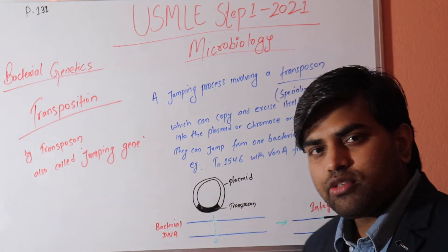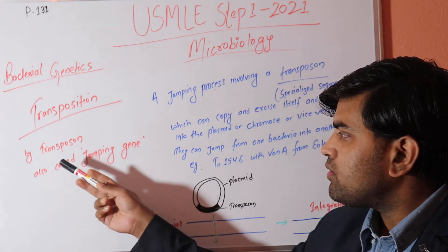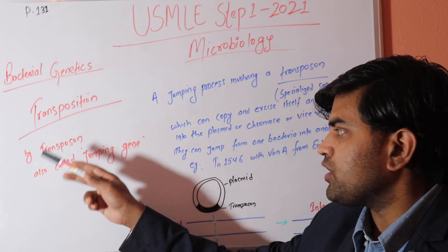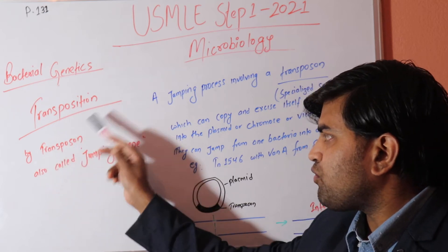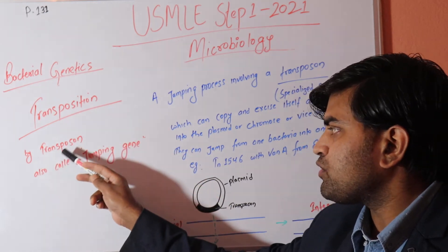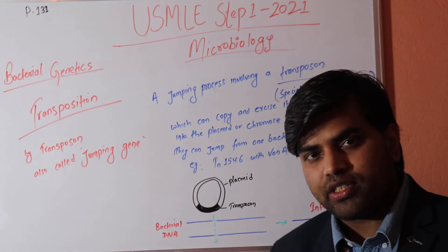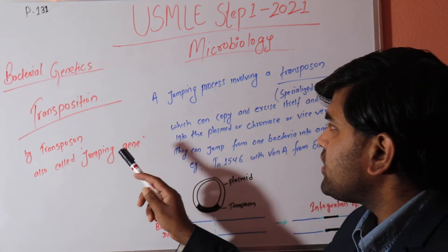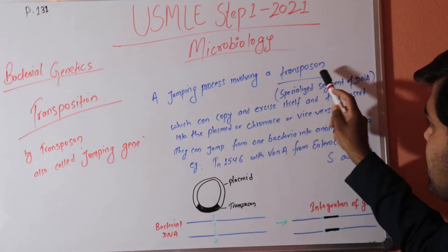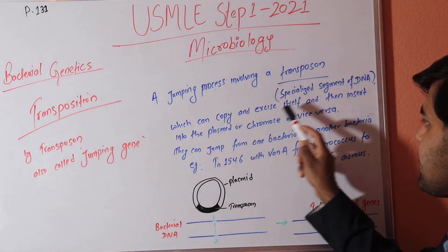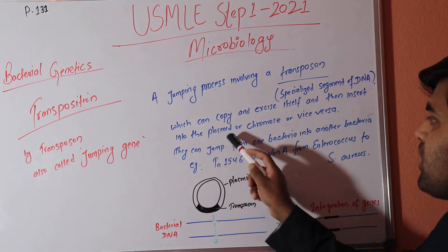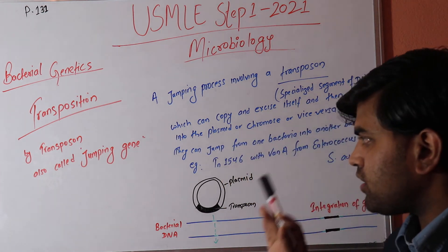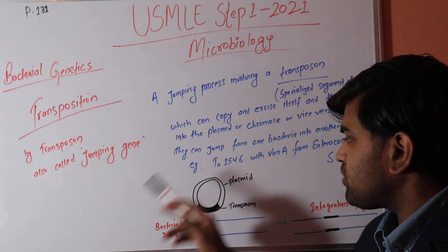That topic is transposition. Transposition is a process performed by transposons, also called jumping genes. Transposition is a jumping process that involves a transposon which can copy and excise itself and then insert into a plasmid or chromosome, or vice versa.